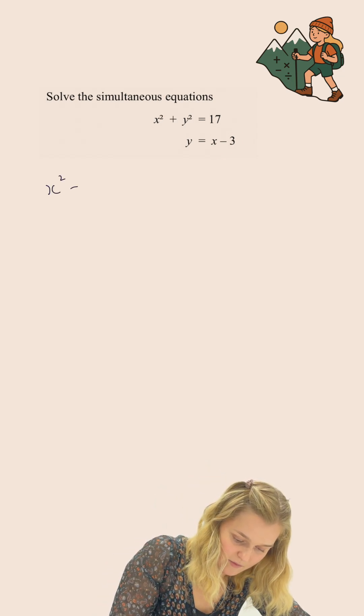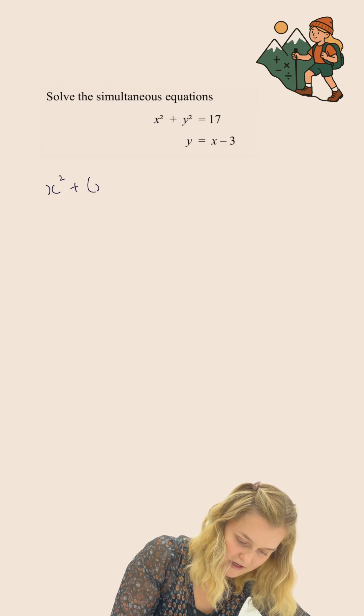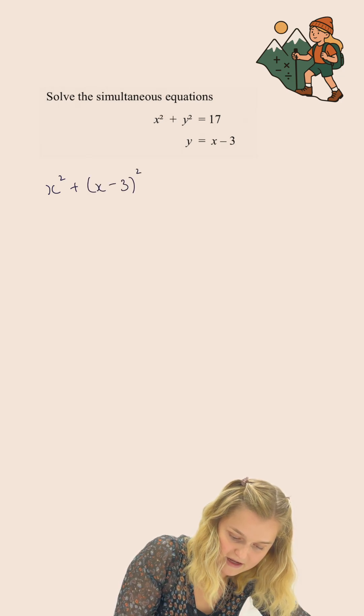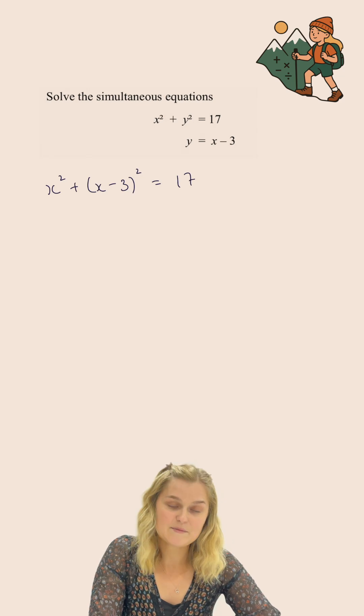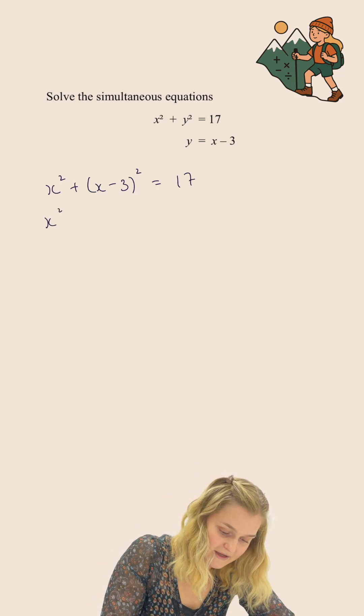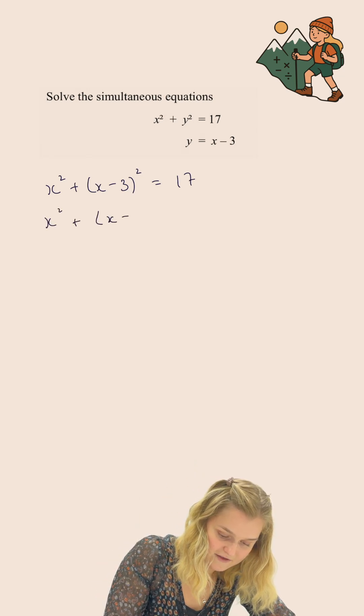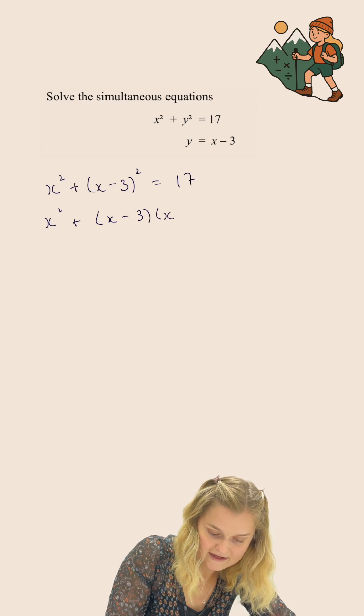So I'm going to end up with x squared plus x minus 3 all squared equals 17. x minus 3 all squared just means that I am multiplying x minus 3 by x minus 3.